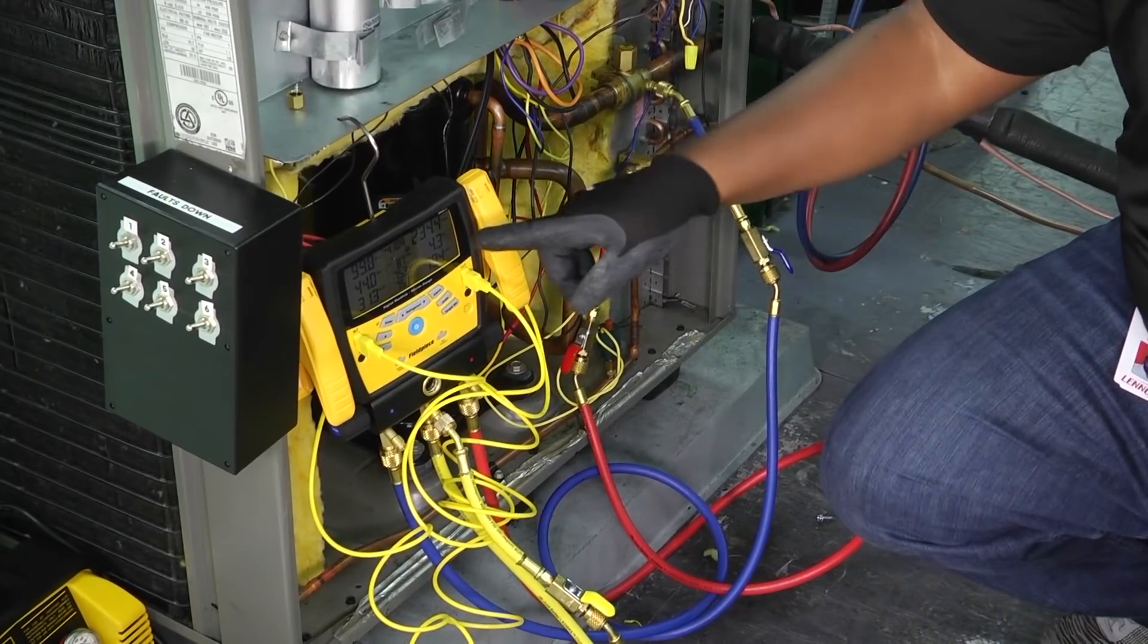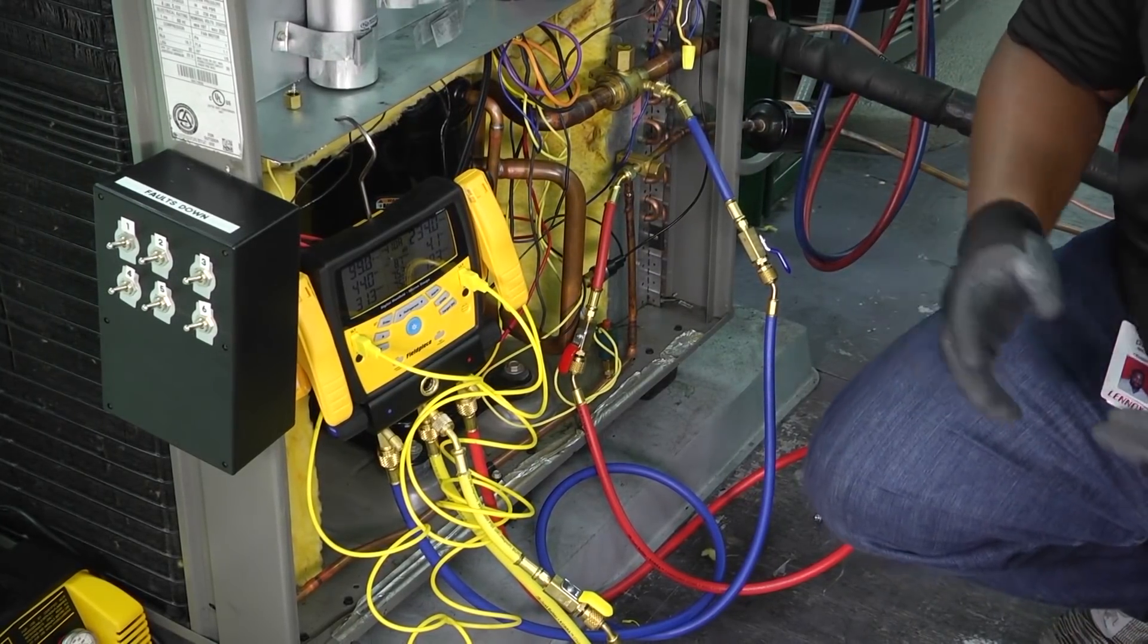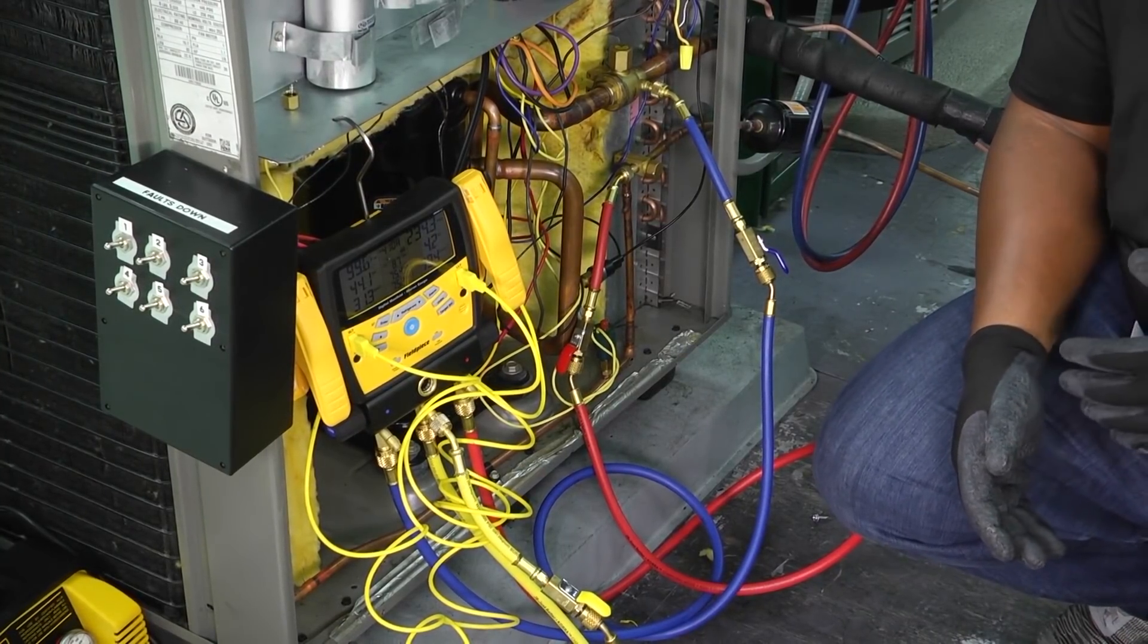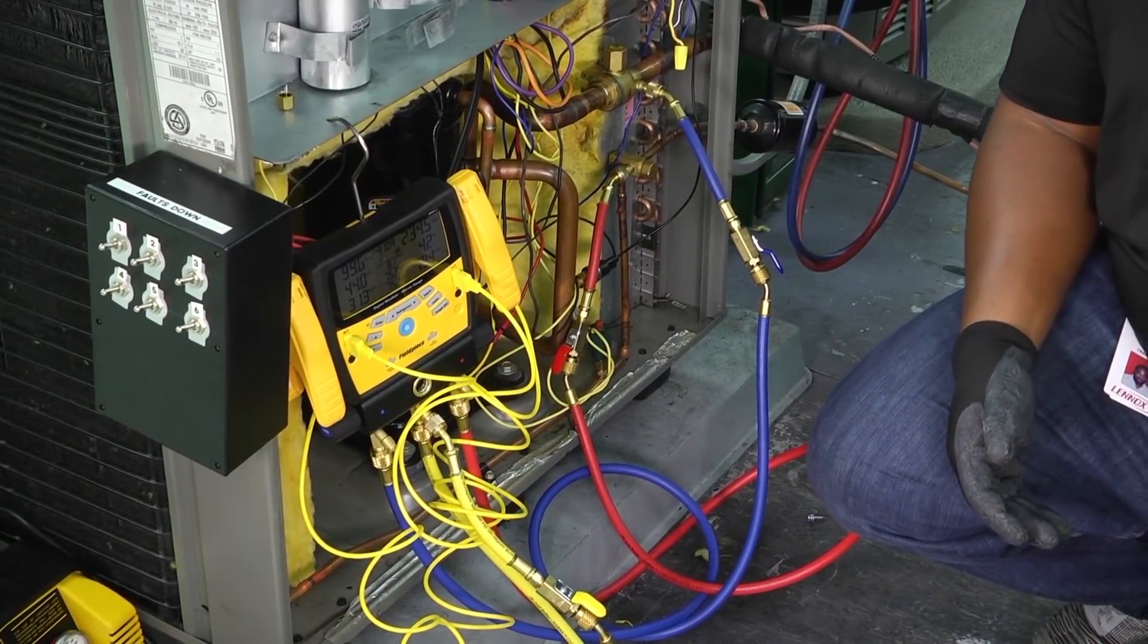If we have a TXV, then we're going to charge by the subcooling number. Subcooling is really easy. If the subcooling is too high, then we take refrigerant away. If the subcooling is too low, then we add refrigerant to our system.